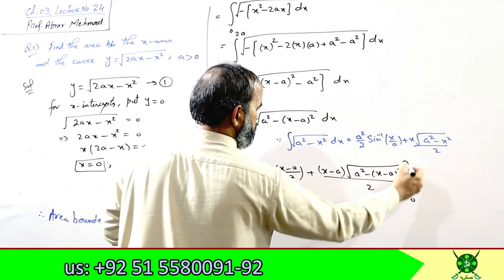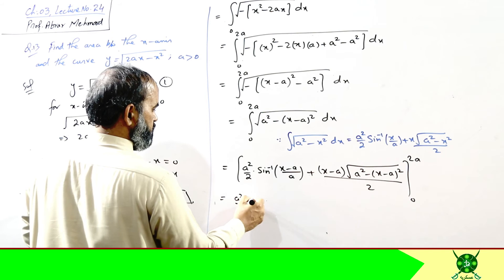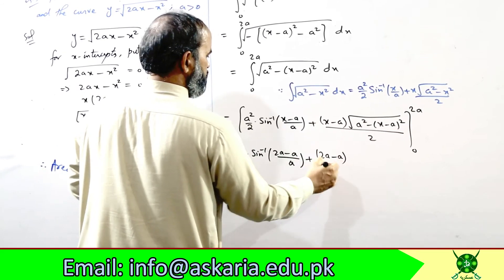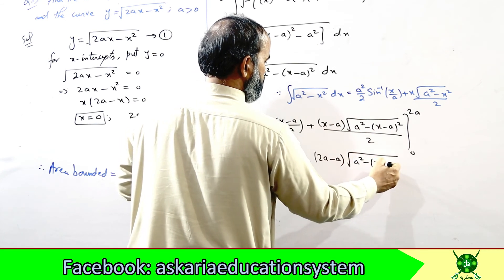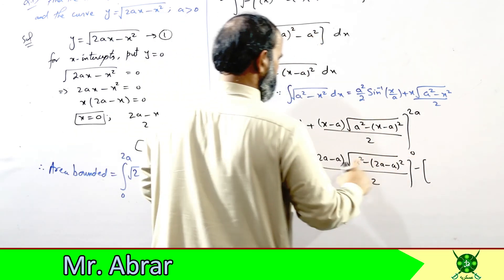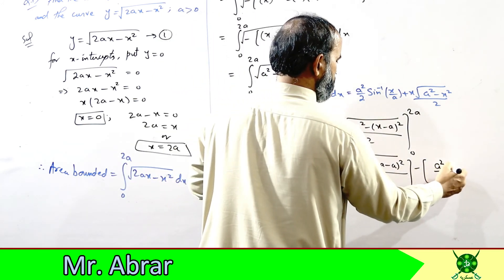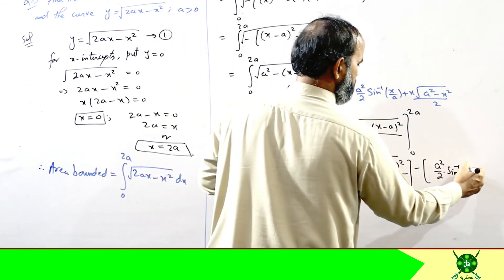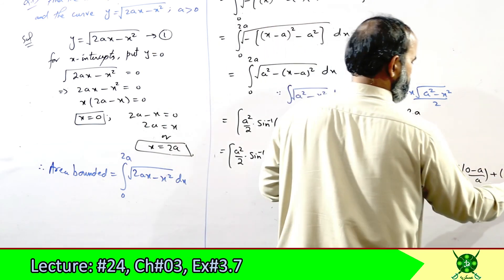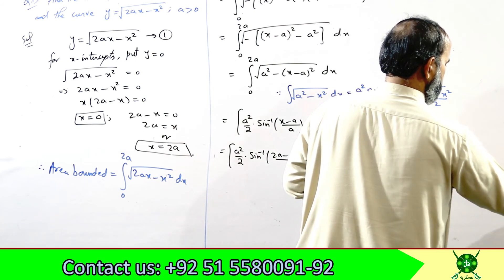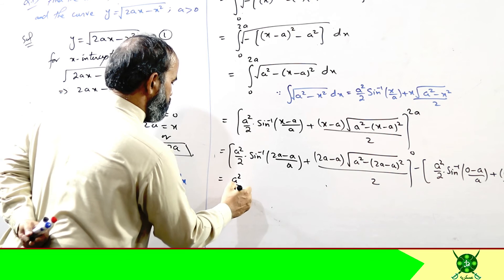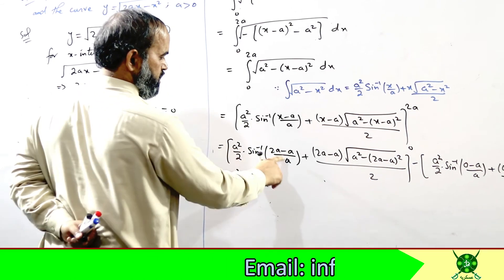Substituting upper limit x = 2a: (a²/2) sin⁻¹[(2a−a)/a] + [(2a−a)/2]√[a² − a²] = (a²/2) sin⁻¹(1) + (a/2)(0). Since a² − a² = 0, the second term vanishes. Now substituting lower limit x = 0: (a²/2) sin⁻¹[(0−a)/a] + [(0−a)/2]√[a² − a²] = (a²/2) sin⁻¹(−1) + (−a/2)(0). Again the second term is 0.